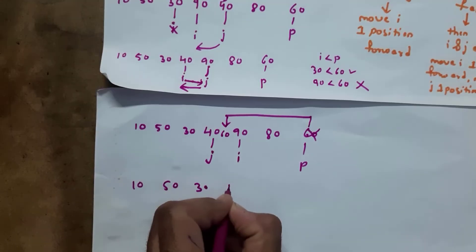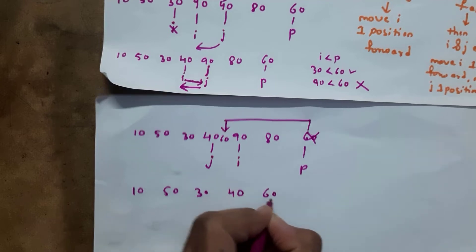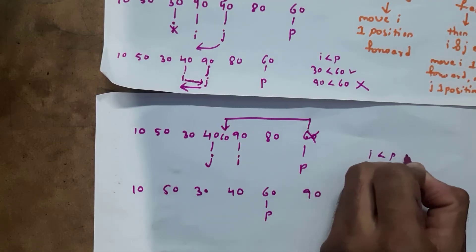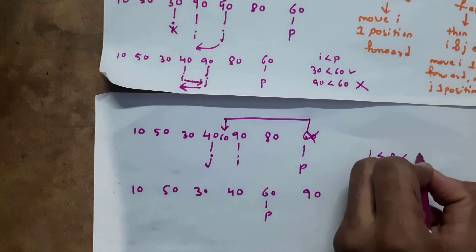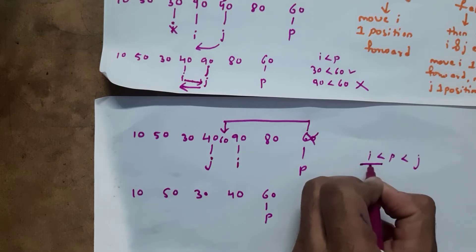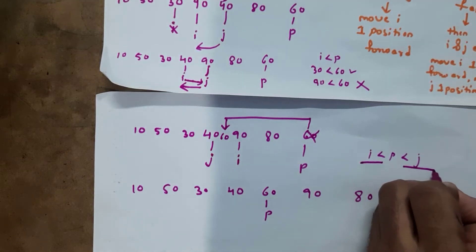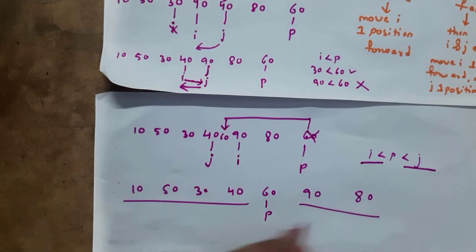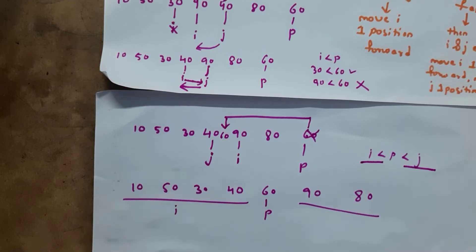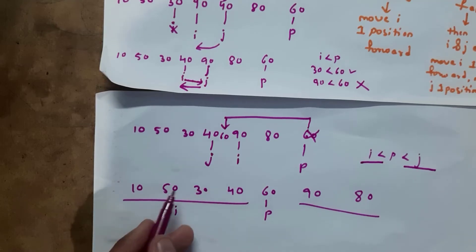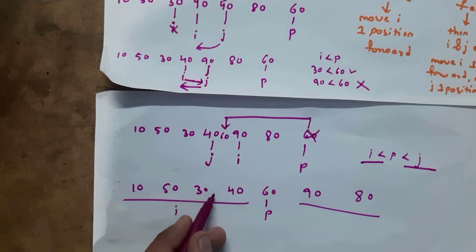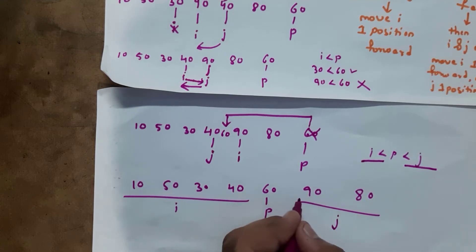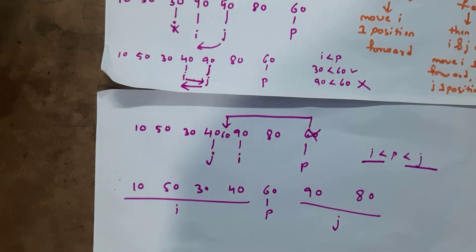After placing pivot 60 between j and i, the array is: 10, 50, 30, 40, 60, 90, 80. The condition i < p < j is satisfied: all left side elements — 10, 50, 30, 40 — are less than pivot 60, and right side elements — 90 and 80 — are greater than 60.